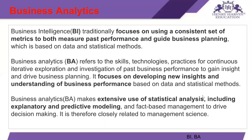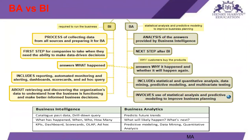BI answers 'what happened' and tries to create dashboards, while business analytics answers 'why it happened and whether it will happen again' and creates statistical modeling and multivariate testing. BI is about the past — what, when, who, how many — while BA is about the future — what will happen next. In BI we create dashboards and scorecards with ad hoc queries; in BA we create predictive models, data mining, and quantitative analysis.